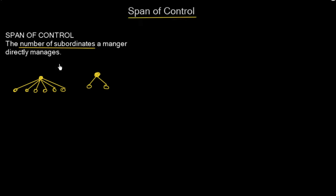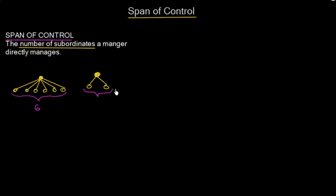So what is the span of control of these two managers? Manager A is overseeing six subordinates, so the span of control in this case is six. Manager B is monitoring two subordinates, so the span of control is two.